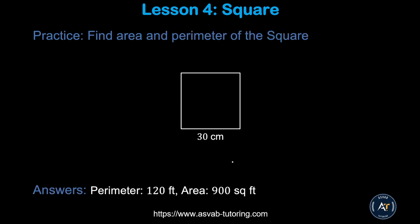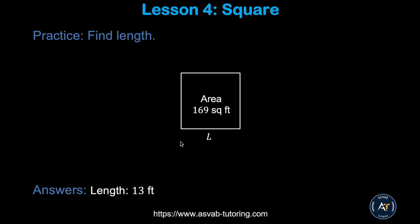Pause the video and try this practice problem by yourself — make sure you get perimeter equal to 120 feet and area equal to 900 square feet. In the next practice problem, the area is given and you have to find the length. Use the formula: L equals the square root of the area. The length in that case is 13 feet.